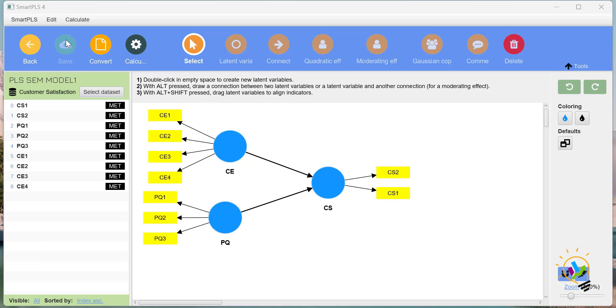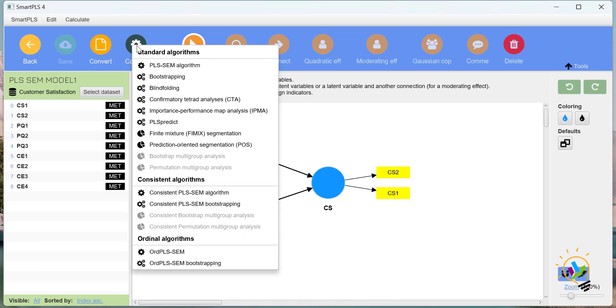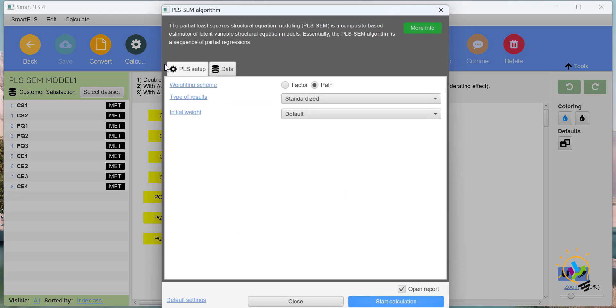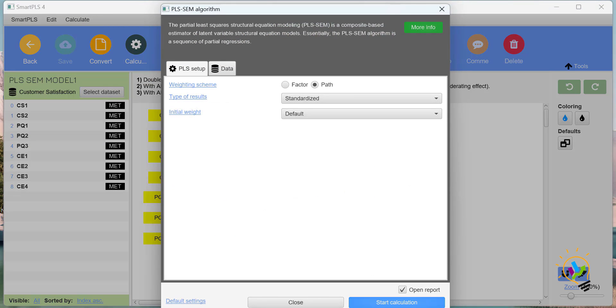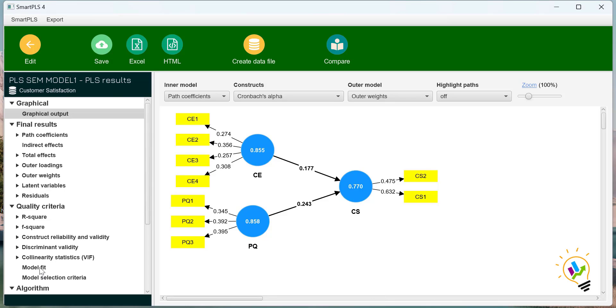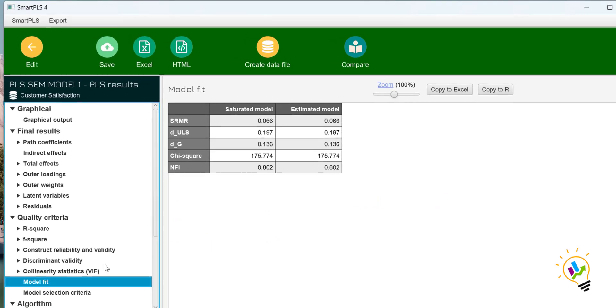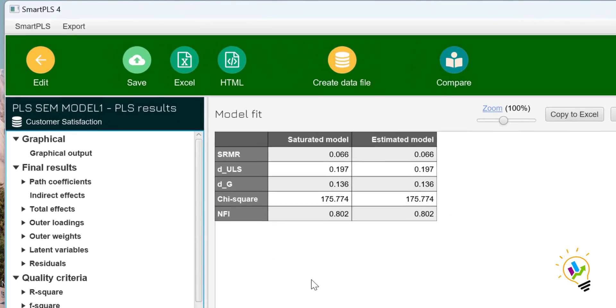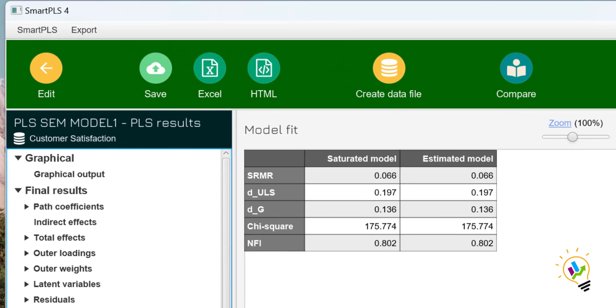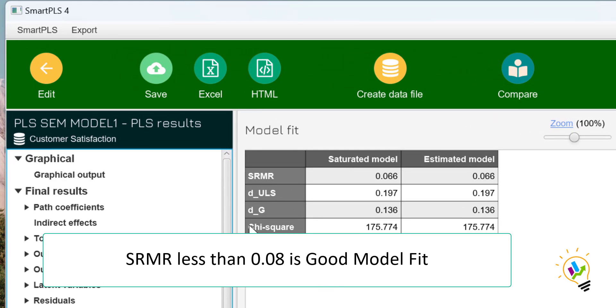For measurement of model fit, we calculate in the PLS-SEM algorithm. If you start calculate, we have in the results model fit. These results are there, but we don't rely on them. Some researchers say that SRMR less than 0.08 is a good fit.